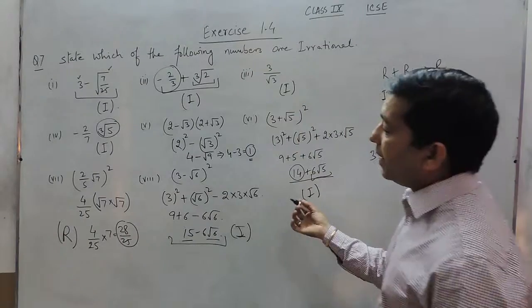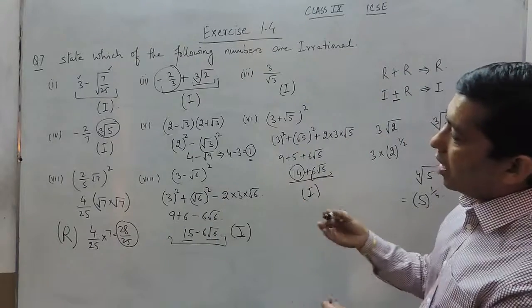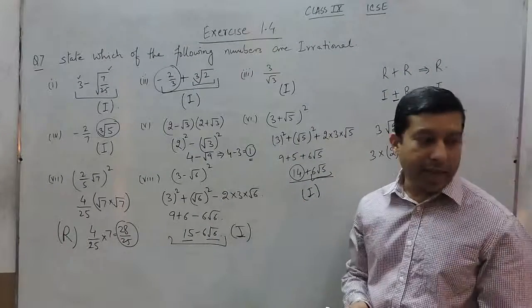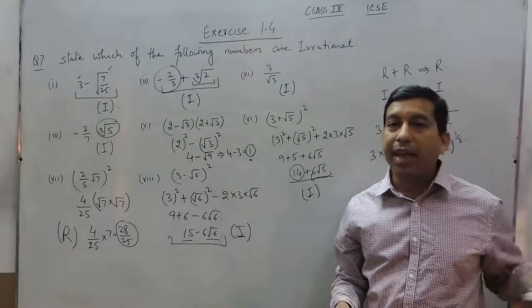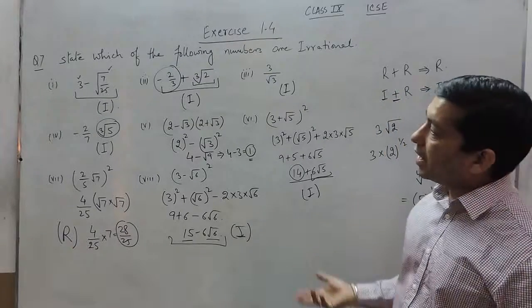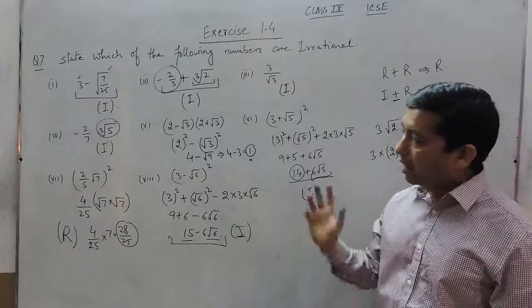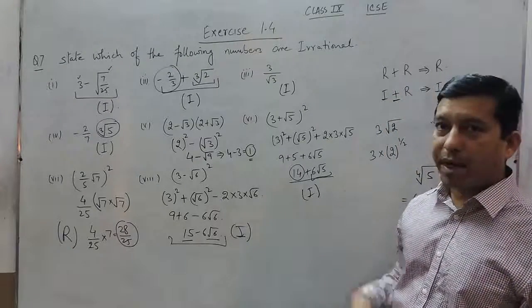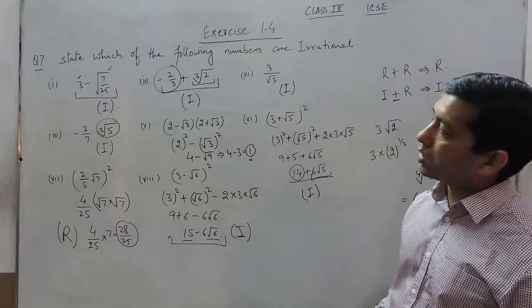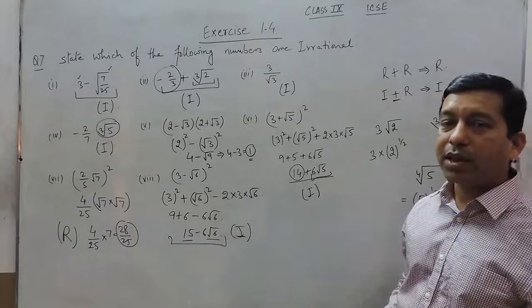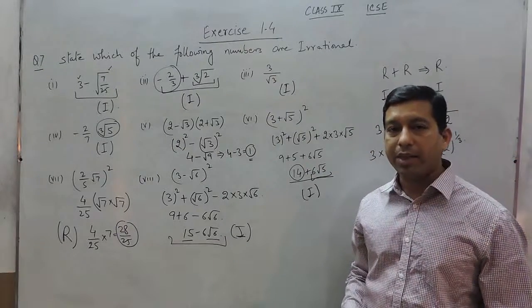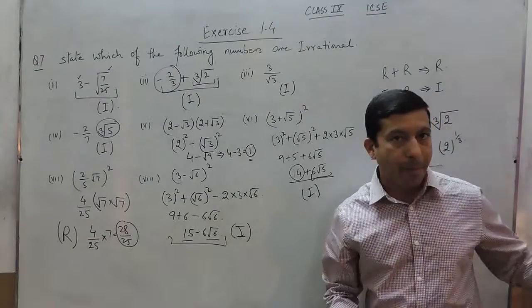Similarly, we can note that a non-terminating and non-recurring decimal is an irrational number — that we have to keep in mind. In the next class we will talk about question number 8 onwards. If you have any problem you can contact us or email us. Thank you.